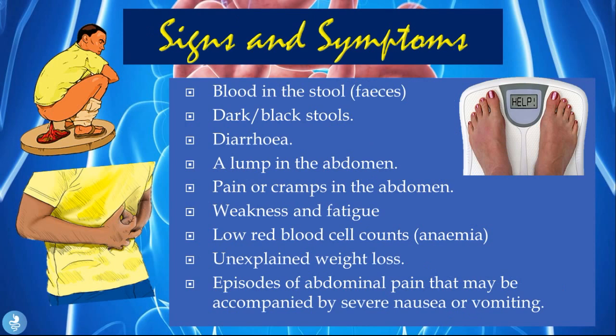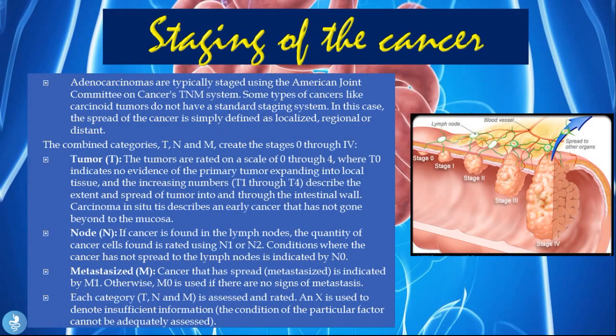Signs and symptoms of small bowel cancer include: fresh blood in the stool (hematochezia); dark or black stools indicating digested blood (melena); diarrhea; a lump in the abdomen; pain or cramps in the abdomen; weakness and fatigue; low red blood cell count due to bleeding from the tumor (anemia); unexplained weight loss; and episodes of abdominal pain accompanied by severe nausea or vomiting.